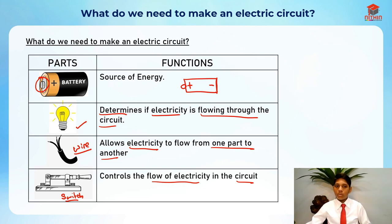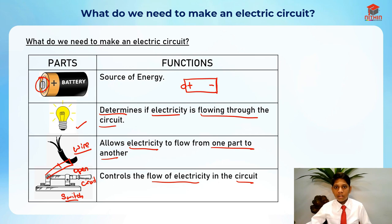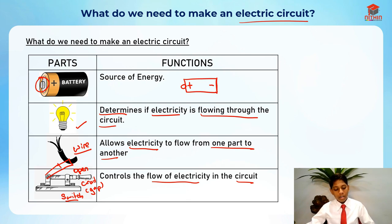When we open the switch, there is an open circuit, which means there is a gap in the circuit. If we close the switch, there will be a closed circuit and electricity can flow through. These are basically the parts we need to make an electric circuit.